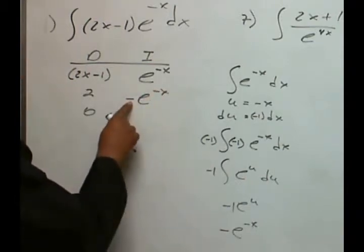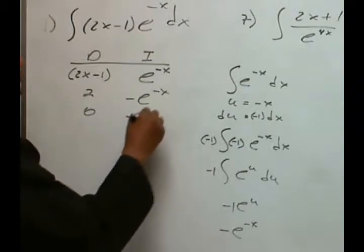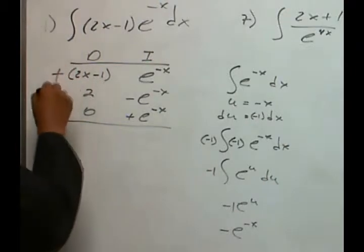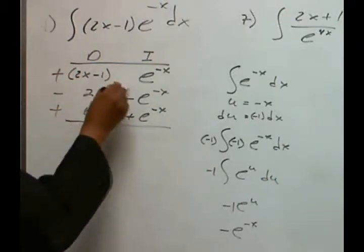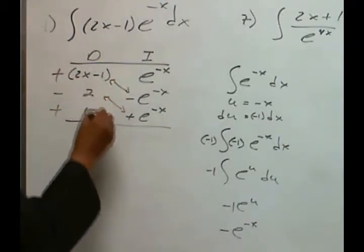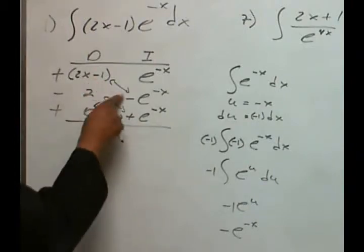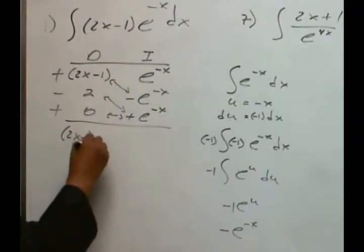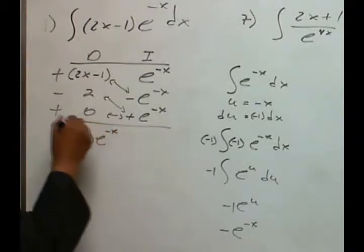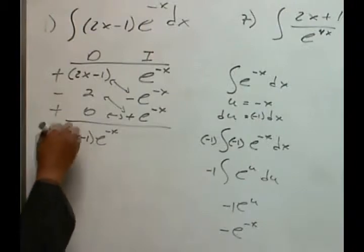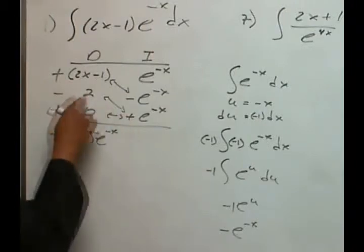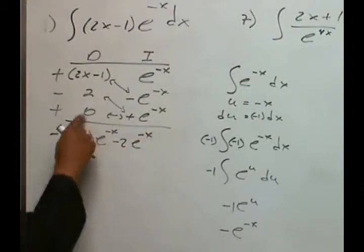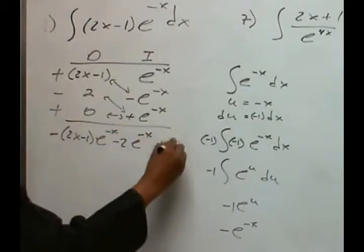The next anti-derivative we'll put another negative, which will get positive e to the negative x. And let's put here plus, minus, plus. Combine these, combine these, and this will be our constant. So when we combine these two, we have 2x minus 1 times e to the negative x, and that's going to be a negative. The combination of these two puts a negative 2 and e to the negative x. And this right here is going to be our constant, so plus c.